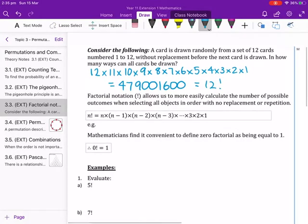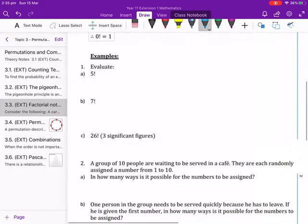In mathematics, we find it convenient to define 0 factorial as being equal to 1. Therefore, 0! = 1. We have some examples here.